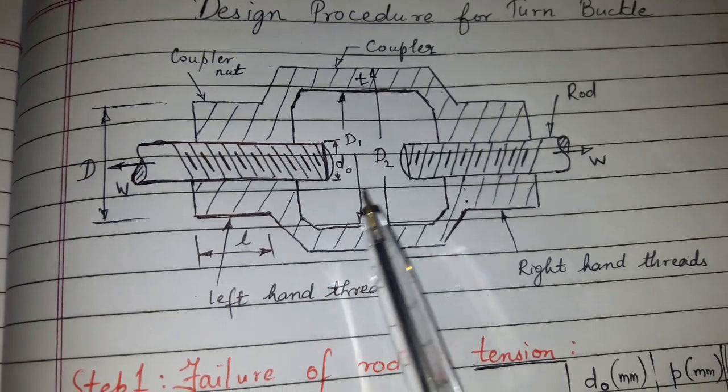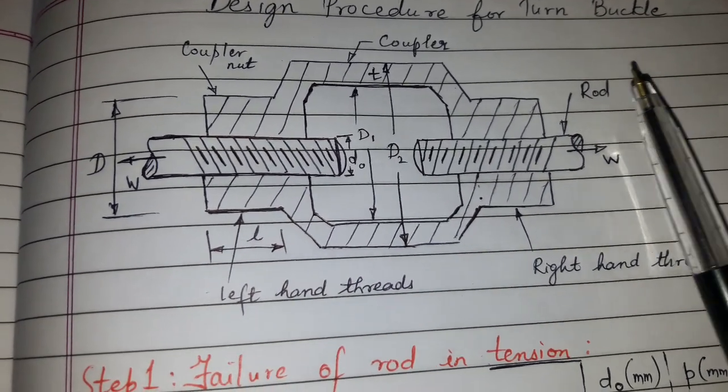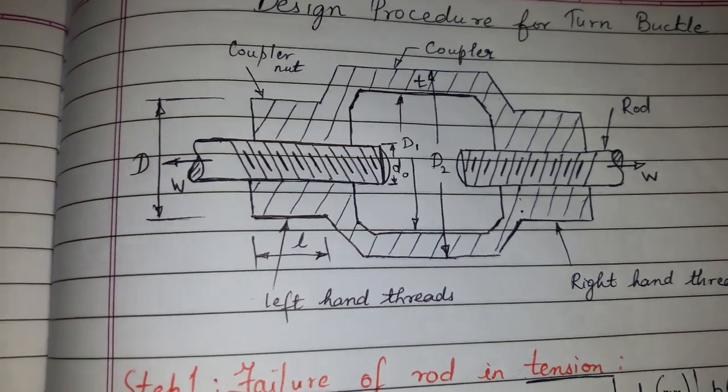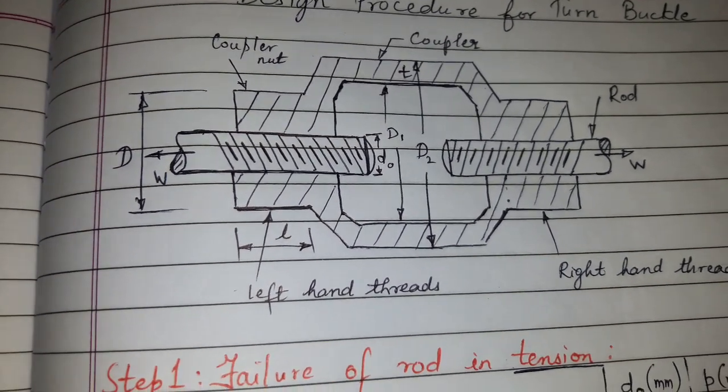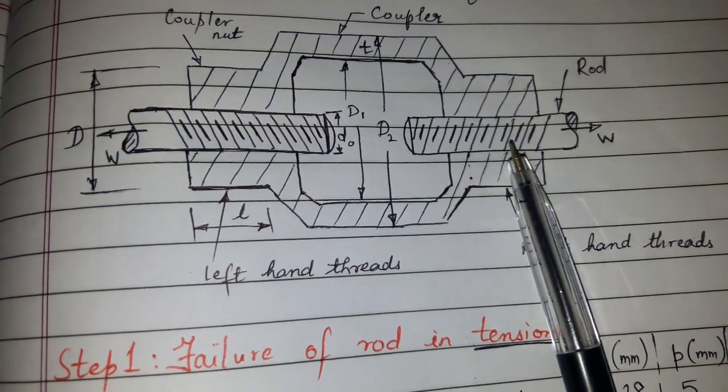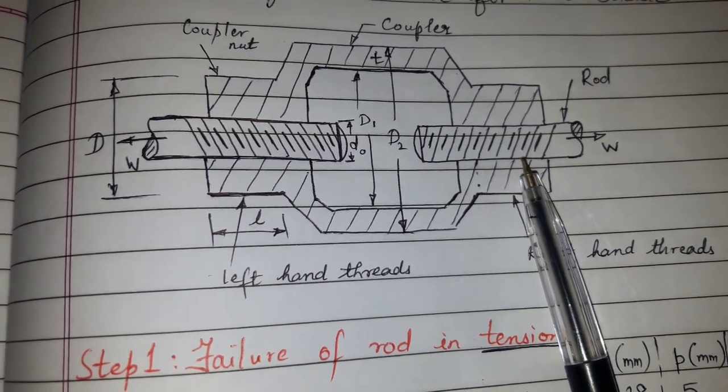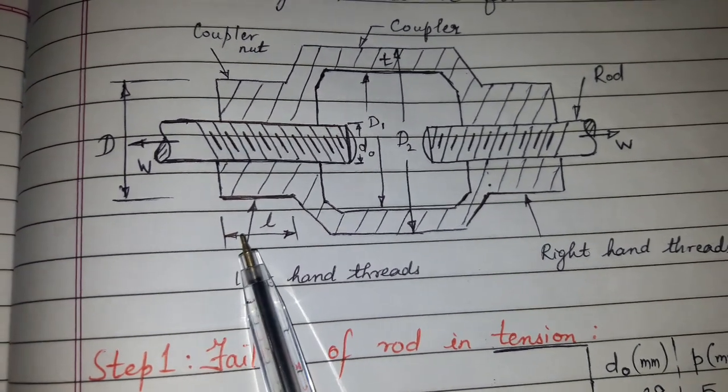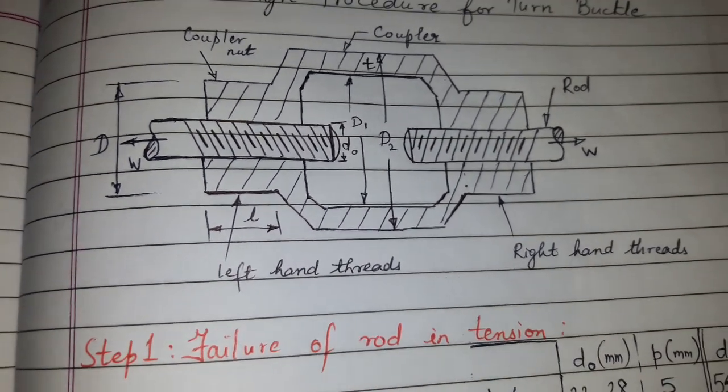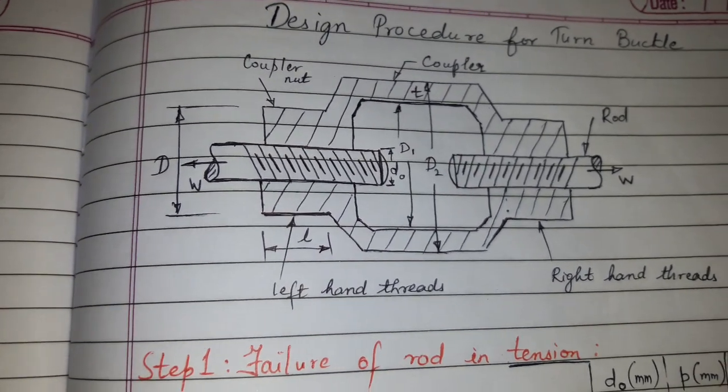This is the length L, and this is the rod which has outer diameter, which we can say as nominal diameter D0, and DC which is the core diameter of the rod. Now this length is the length of the coupler nut because there will be another length also which will be the length of the coupler, which will be the total length.